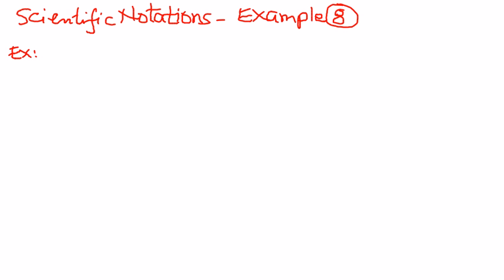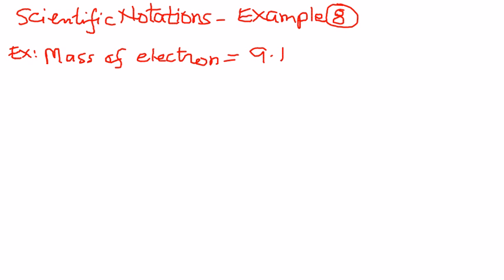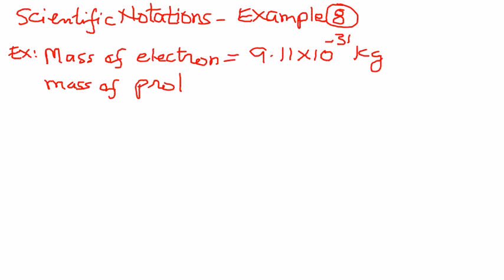We will write the quantities which we know from basic physics as follows. Mass of electron is equal to 9.11 times 10 to the power of negative 31 kilograms. And mass of proton is equal to 1.67 times 10 to the power of negative 27 kilograms.